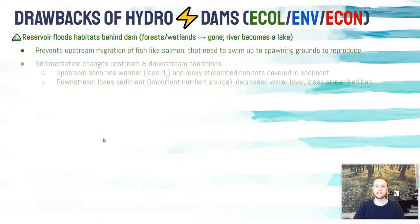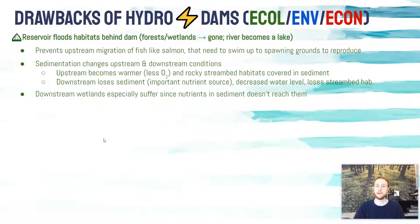Sediment buildup is going to change both the upstream and downstream ecosystem. The dam deprives downstream ecosystems of the nutrients that come with sediments flowing along the bottom of the water — sediments can be broken-down bits of organic matter containing nutrients like phosphorus and nitrogen. Wetland ecosystems especially depend on that fertile organic matter, so a dam prevents those downstream wetlands from receiving the nutrients they need.